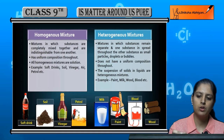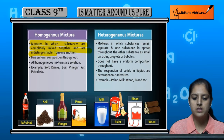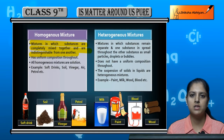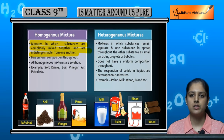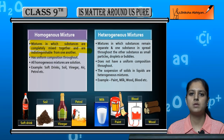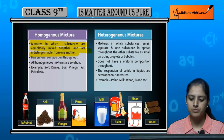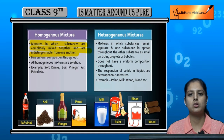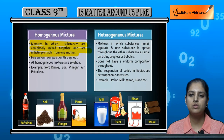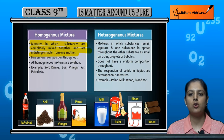Mixtures in which substances are completely mixed together and are indistinguishable from one another are homogeneous mixtures. For example, if you add salt to water and mix it, the salt dissolves and you cannot tell how much salt was added. You cannot distinguish what has been added to the solution. That is what we call a homogeneous mixture.